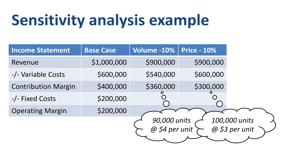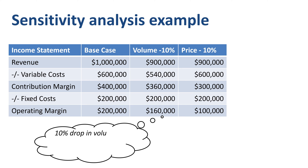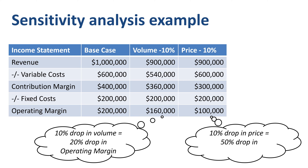Deduct the fixed costs, which stay at $200,000 — the same as in the base case scenario. Then look at operating margin: $160,000 in the 10% volume drop scenario, but only $100,000 in the 10% price drop scenario. From this, we learned that a 10% drop in volume leads to a 20% drop in operating margin, while a 10% drop in price leads to a 50% drop in operating margin. Be much more afraid of a drop in price than of a drop in volume!